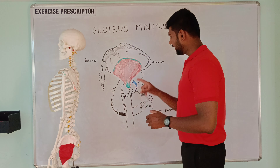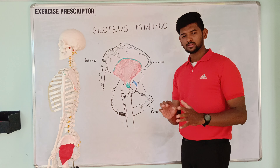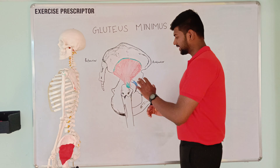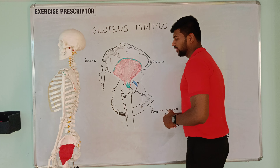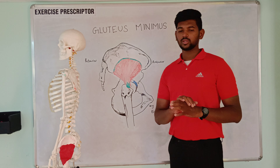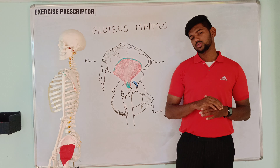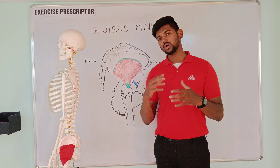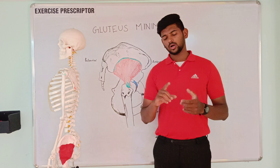Second point: the anterior fibers of gluteus minimus are the thickest, so they create the strongest action. The posterior fibers of gluteus medius are the strongest, so the posterior fibers of gluteus medius create the strongest action.